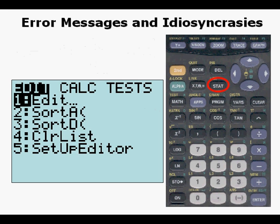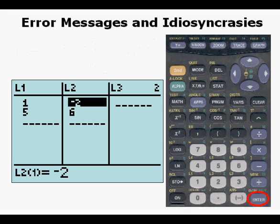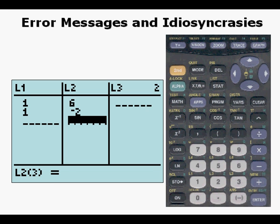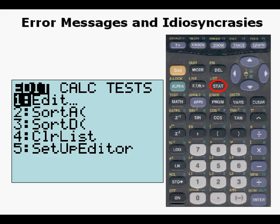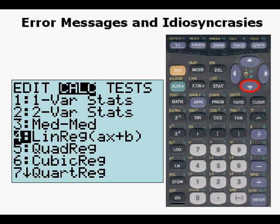Let's try something else. Let's go to stat enter, and we've entered 2 points here, 1,6 and 1, negative 2, and we're going to find the equation of the function that draws a line between these 2 points. We go to stat calc 4, enter.